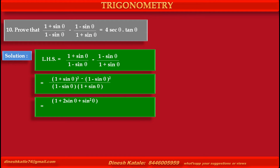Minus the expansion of the second bracket: 1 - 2sinθ + sin²θ. Upon the product of the denominators: (1 - sinθ)(1 + sinθ), which equals 1 - sin²θ, according to the identity.